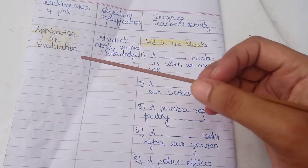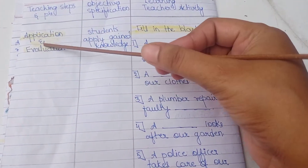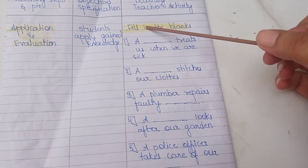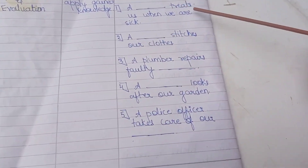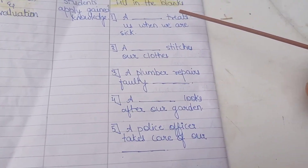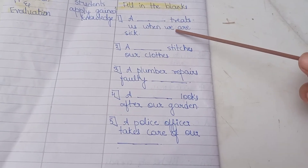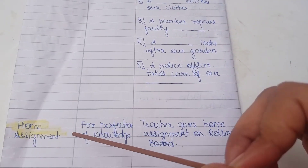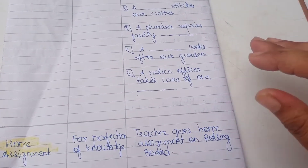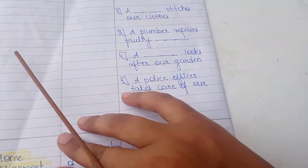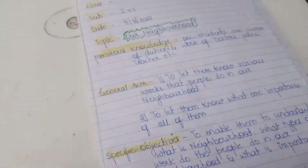On the last page, we have application and evaluation — fill in the blanks. I have five fill-in-the-blank questions here; five is the maximum. Last is the home assignment — for perfection of their knowledge, we also give home assignment to students on the rolling board.